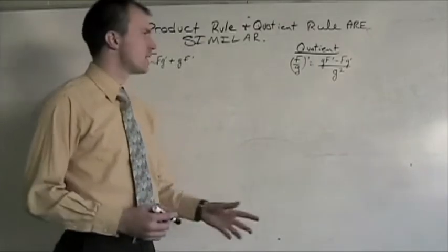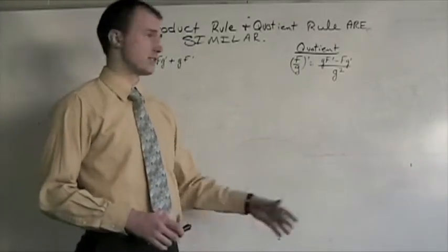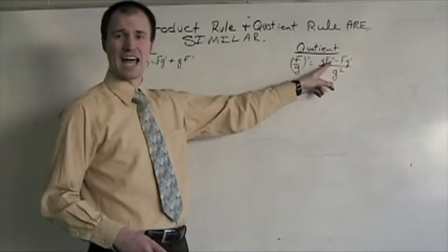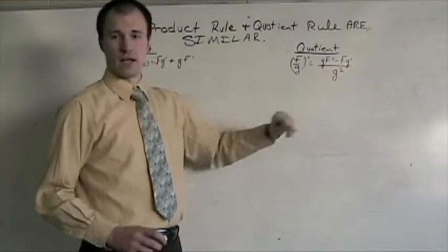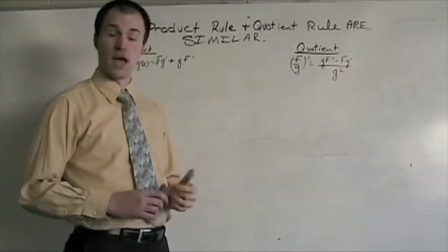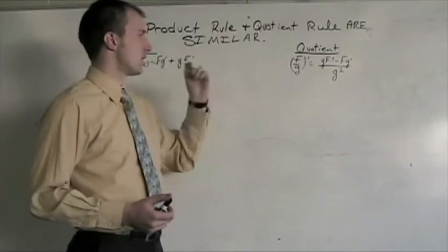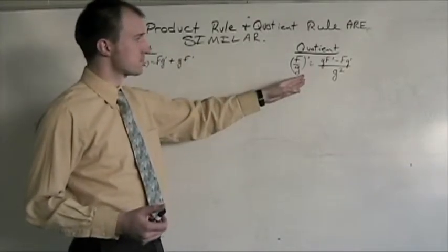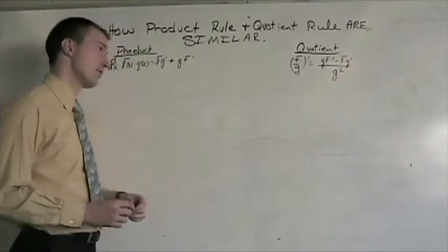Again, g is in our denominator. Another way to remember this that might help is to take the idea of low d high minus high d low, all divided by low squared. That way you can keep in mind where these different pieces are coming from, the low function being the one that's lower than the high function.